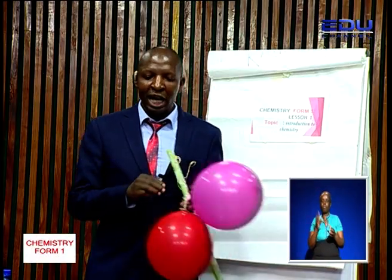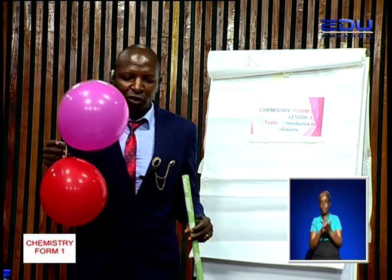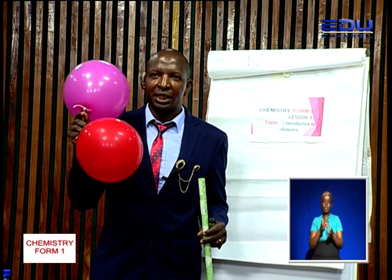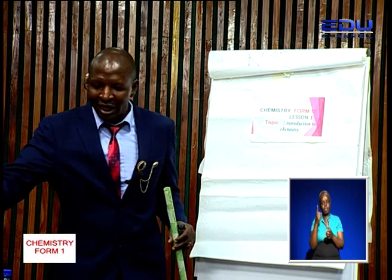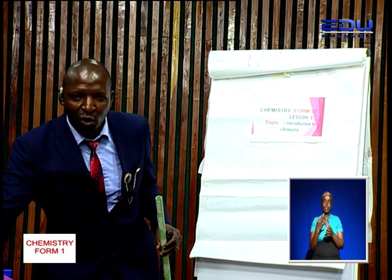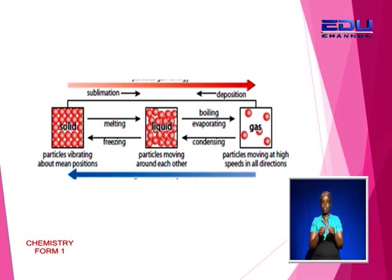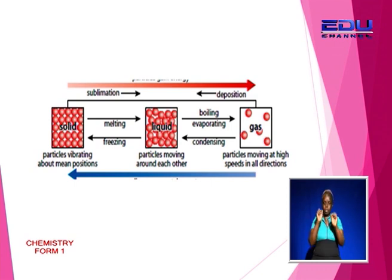Now let's look at some of the properties of matter. The three states of matter are solid, liquid, and gas. One thing we need to understand is that the three states of matter are interconvertible — that means you can convert a substance from one state to another, as shown in the diagram on the screen. You can convert a solid into a liquid.